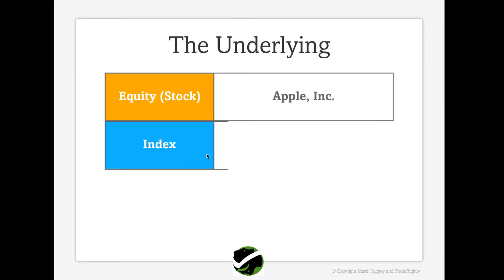The second type is an index. Indices are tracking instruments that follow the composite value of many individual equities. A classic example is the S&P 500, which tracks the value of 500 leading companies in various industries and is often used as a measure of the market as a whole. Apple is part of the S&P 500, as is Exxon Mobil, General Electric, and Coca-Cola.